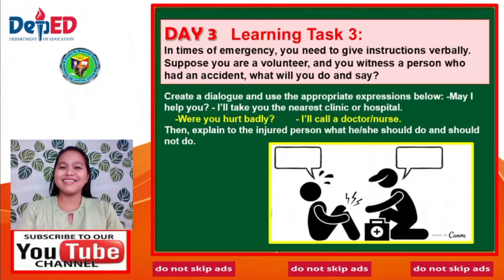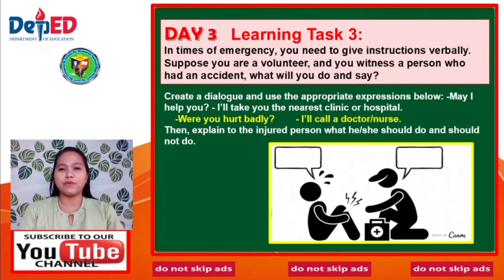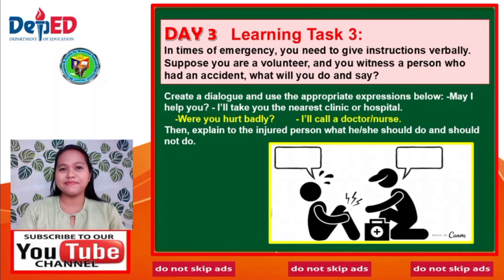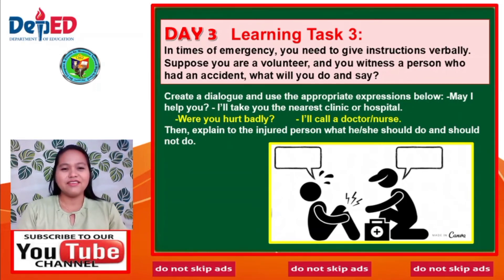For Day 3, Learning Task 3: In times of emergency, you need to give instructions verbally. Suppose you are a volunteer and you witness a person who had an accident. What will you do and say? You are going to create a dialogue using appropriate expressions such as: 'May I help you?', 'I'll take you to the nearest clinic or hospital.', and 'I'll call a doctor or a nurse.' Then explain to the injured person what he or she should and should not do.